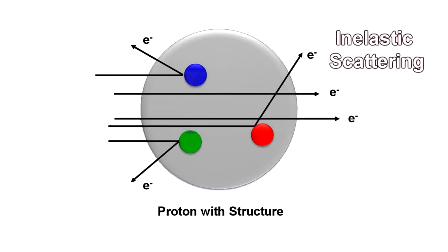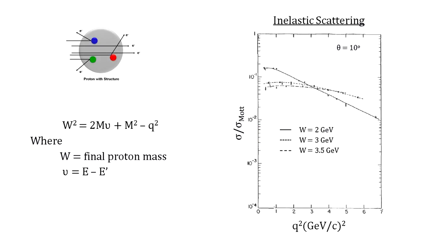For inelastic scattering, the proton takes a considerable amount of energy from the electron without materially changing the probability of a hit. This happens when there are internal components for the electron to excite and bounce off of. Here is what the SLAC-MIT experiment found. It shows that the proton has parts. Three parts.